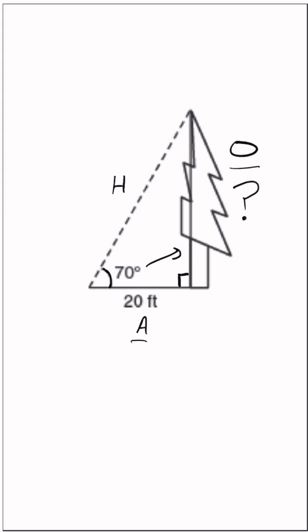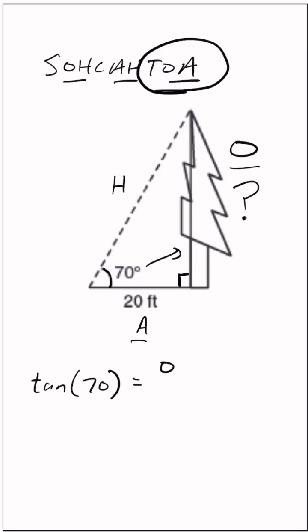If we use SOHCAHTOA, we can see that whenever we have the opposite and adjacent, we're going to use tangent. So we're going to write tangent of 70 degrees equals opposite over the adjacent, which is 20.